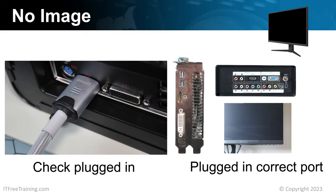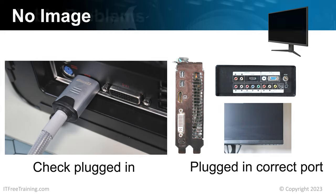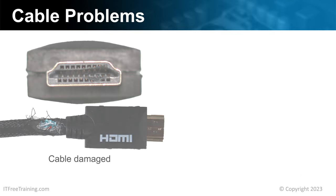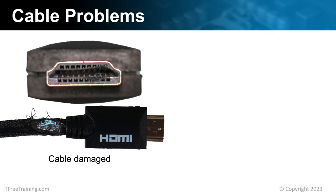If this does not fix the problem, there may be something wrong with the cable. If there is a problem with the cable, this can also mean that no image will be displayed. In some cases, the cable may be damaged — for example, the pins in the connector or the cable itself may be frayed. It only takes one pin or wire to be damaged to stop the cable working. Some damage you may not be able to see. If you can't get an image to appear, try another video cable to see if this fixes the problem.